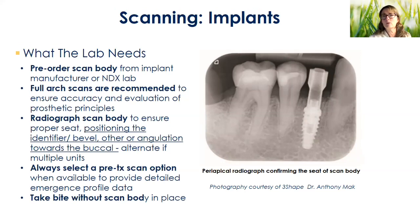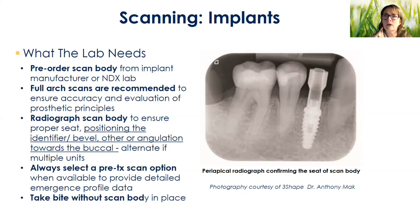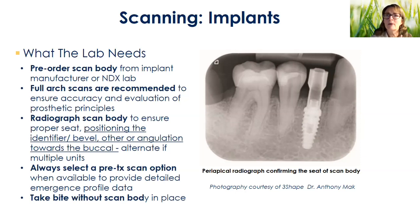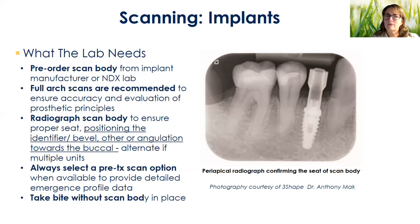Every scan body has what we refer to as a key identifier — that might be a bevel, a divot, or some sort of key angulation. Do your very best to place it so it's facing buccally. If you have multiple units in a row, alternate: key identifier buccally, then lingually, then buccally, then lingually. Please don't try to use the same scan body and move it from one tooth to the next, or keep them all facing buccally. The scanners are really smart, but they're not smart enough to realize sometimes that it's an identical part, and it tends to get stuck and doesn't stitch the data together very well.